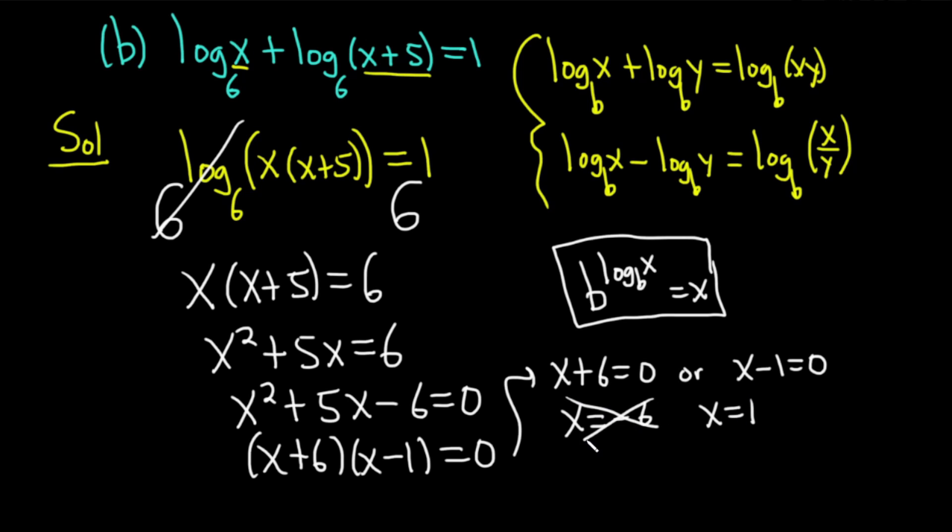Negative 6 is not going to work. Right away you can tell. If you put a negative 6 up here into the equation, you're going to get log base 6 of negative 6. You can't take the log of a negative number. It fails. So it's not going to work because when you plug it in, you'll get log base 6 of negative 6. Can't do that.